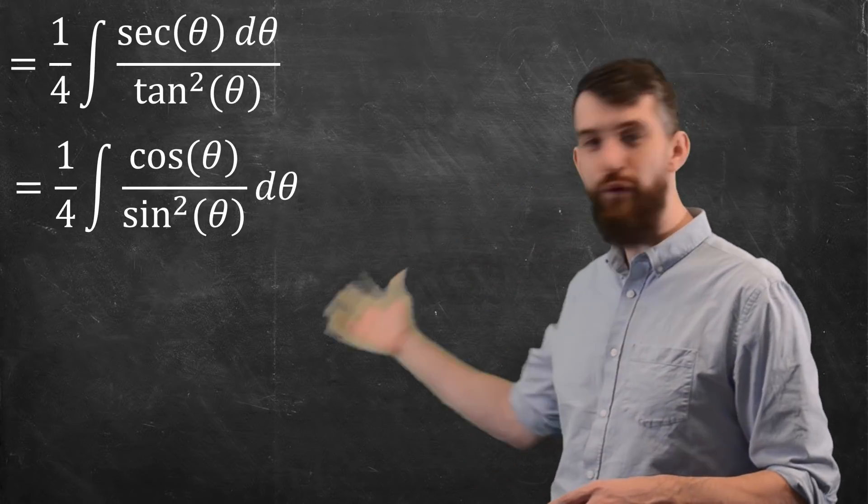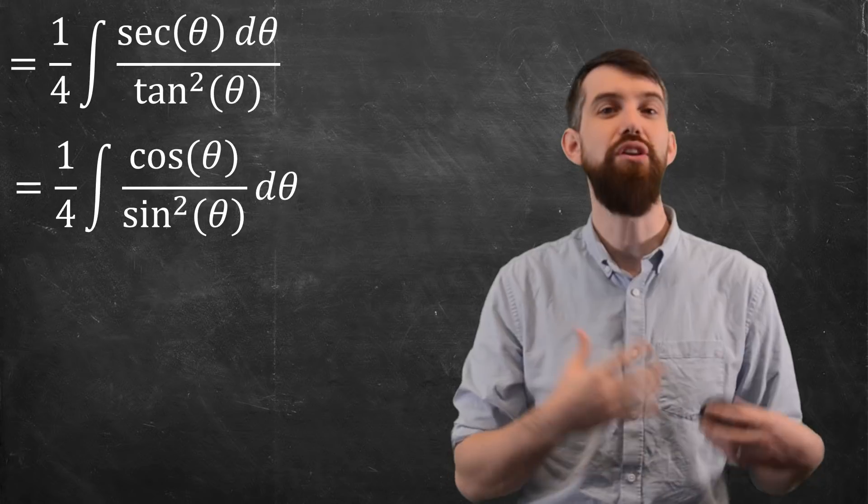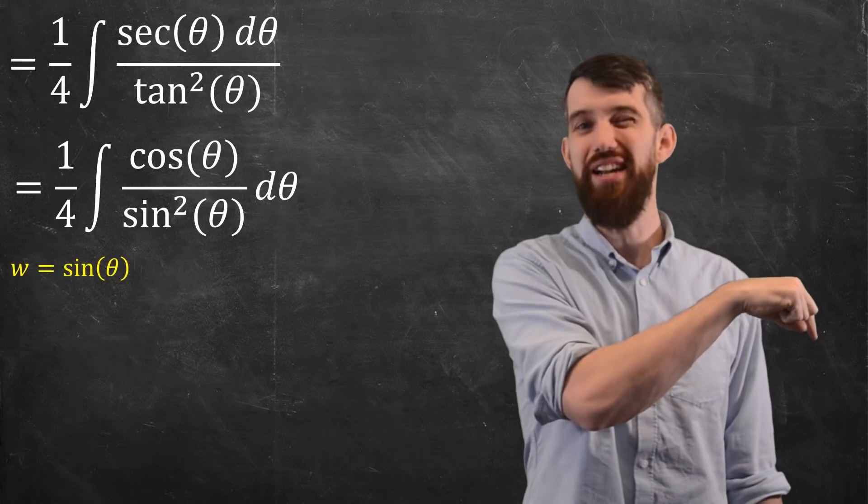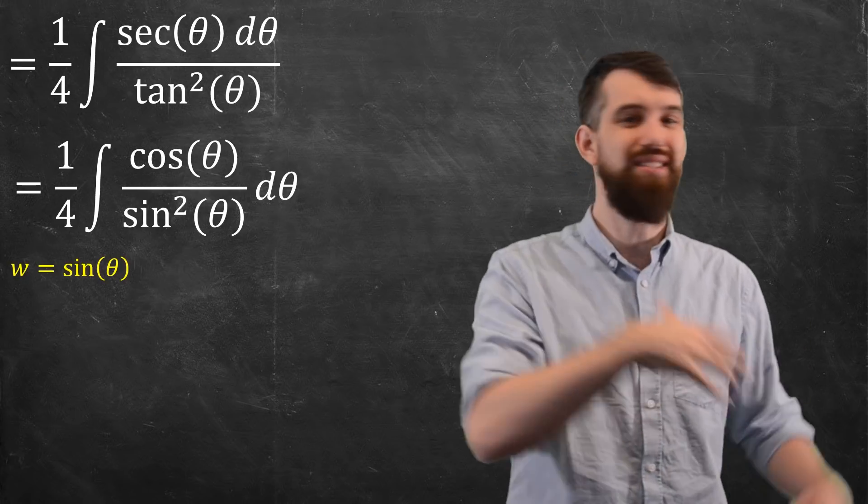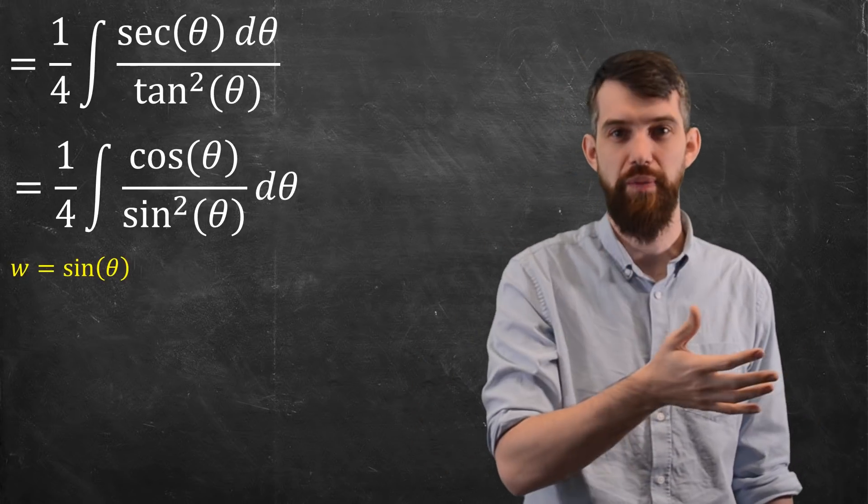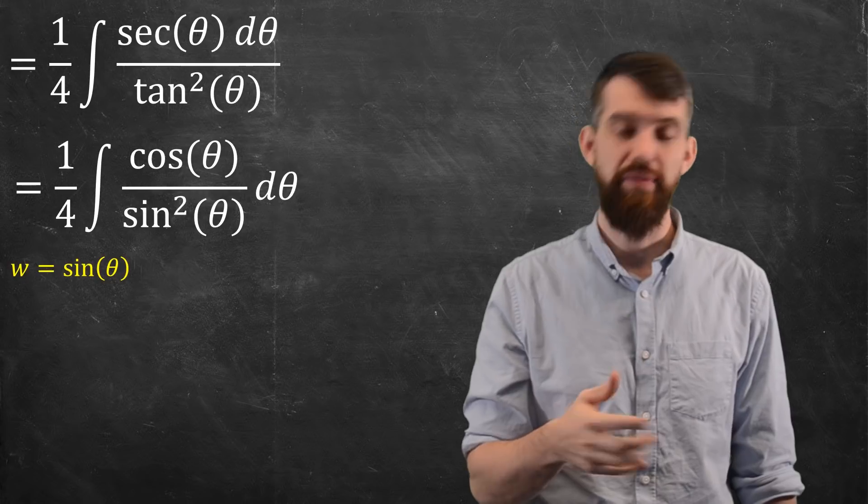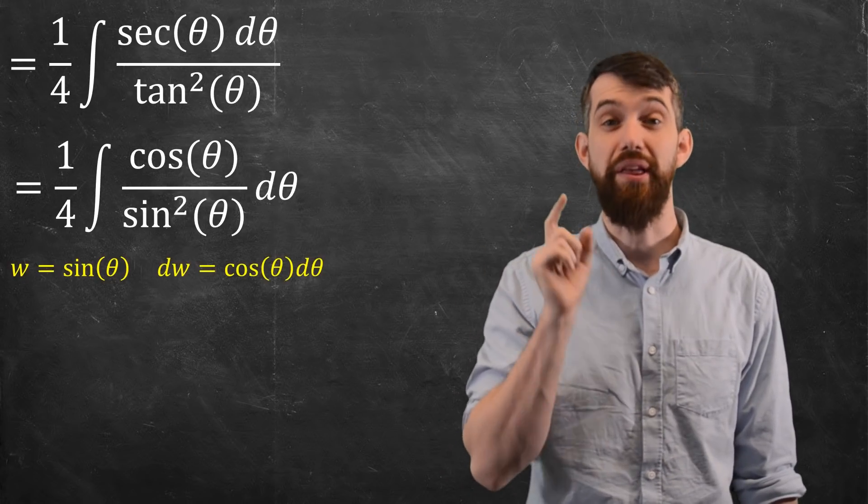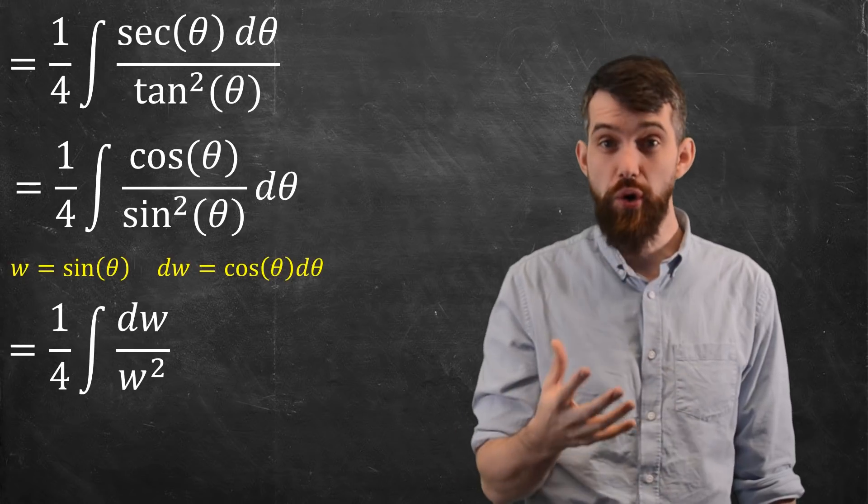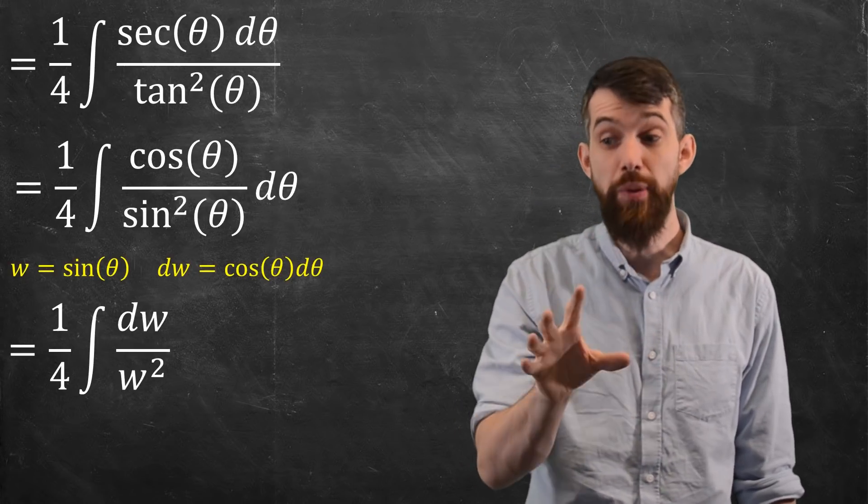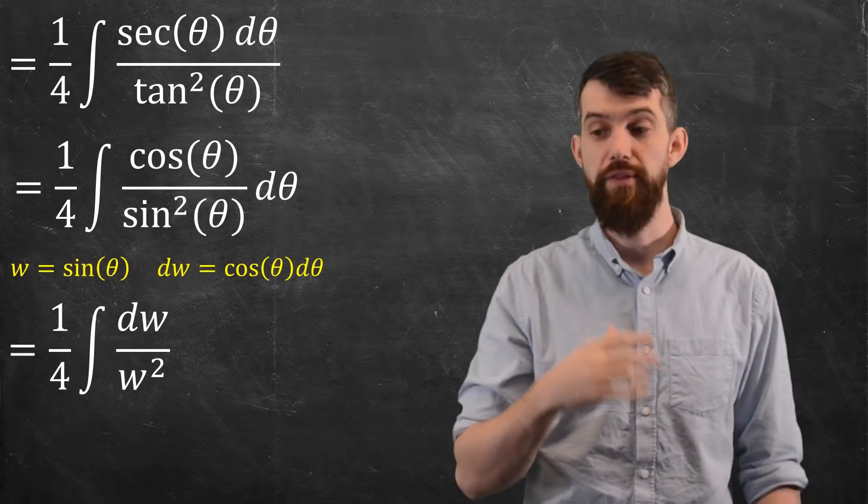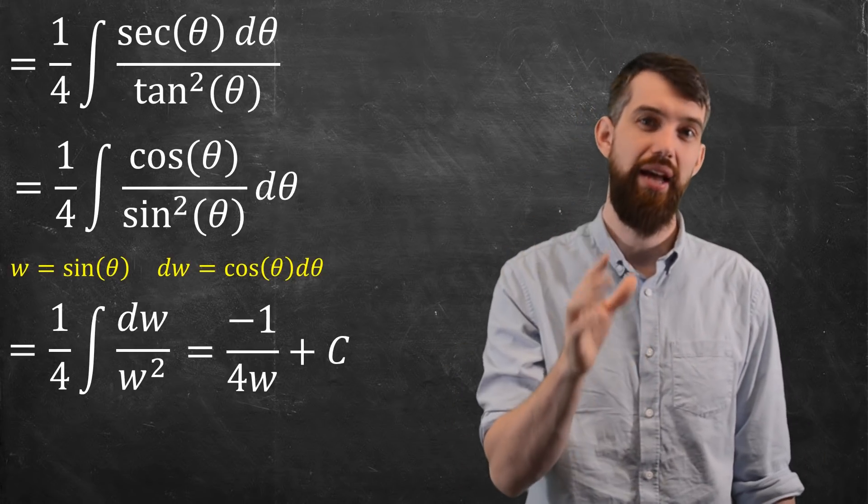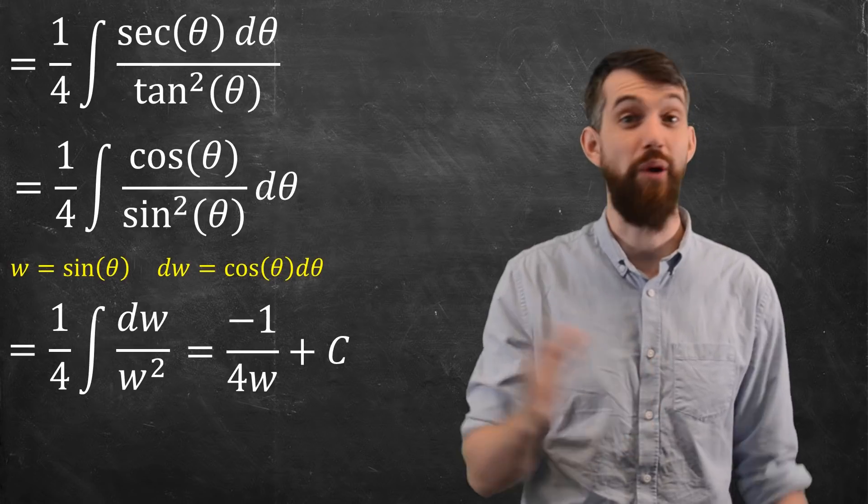Now that we have this in a nice form with sines and cosines, I think I can do a substitution. But I'm going to call it a W substitution, because I already had a U substitution earlier on. It's the same sort of idea, but I'm just going to call it W. So I'm going to set W is sine of θ, and of course, dW is cosine of θ dθ. And then when I plug that in, I'm going to get the one-quarter, the integral of the dW over W squared. This is just the power rule, so we're going to say it's minus one over four W plus the C, as it's an indefinite integral.